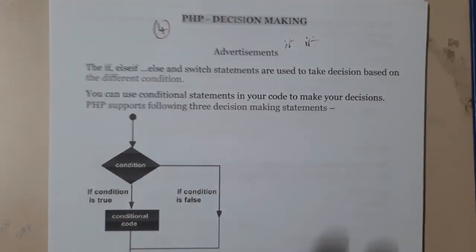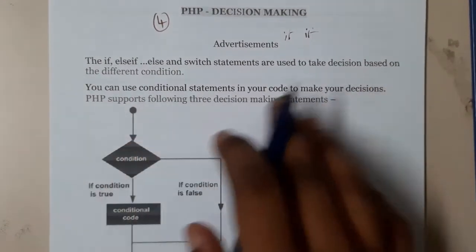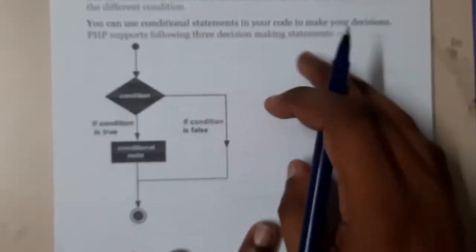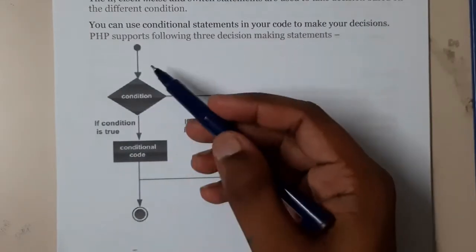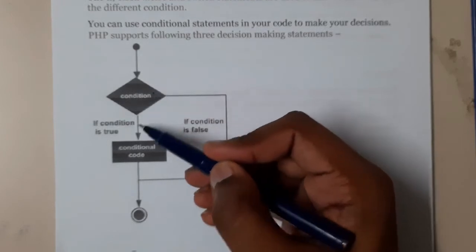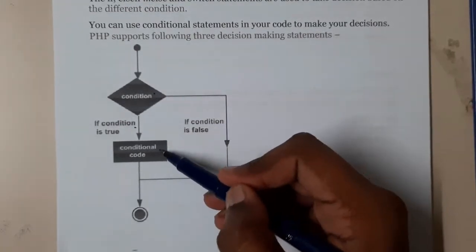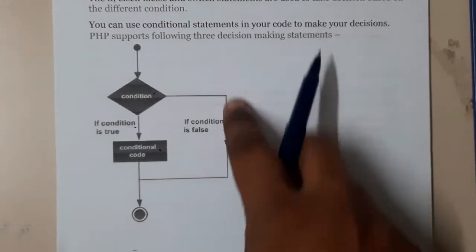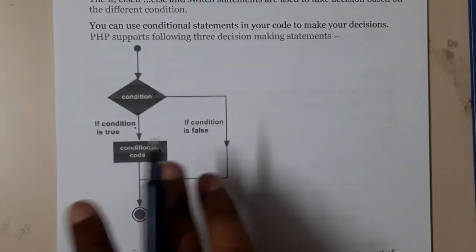So basically, this is the flowchart for if. You start with a condition — if the condition is true, you execute the statements inside it. If it is false, you directly exit and go to the exit state.